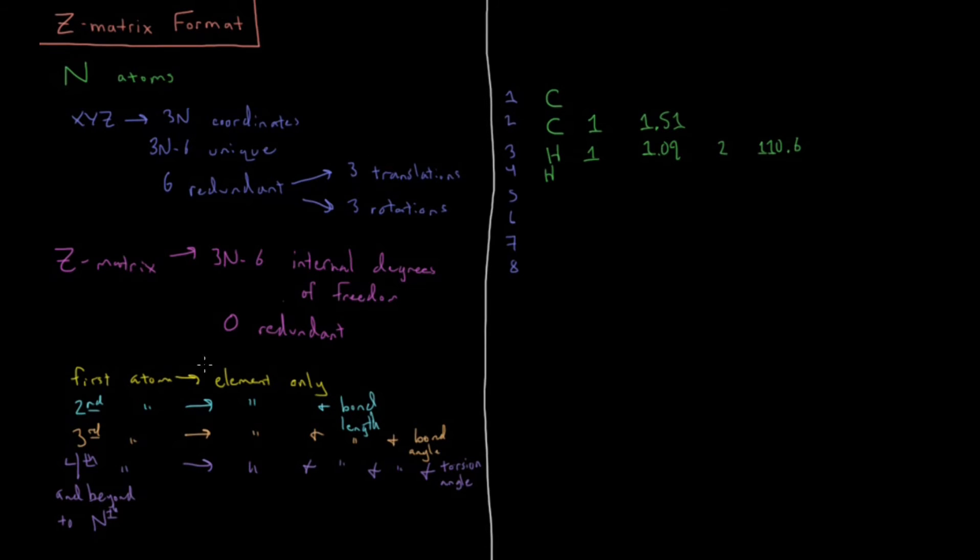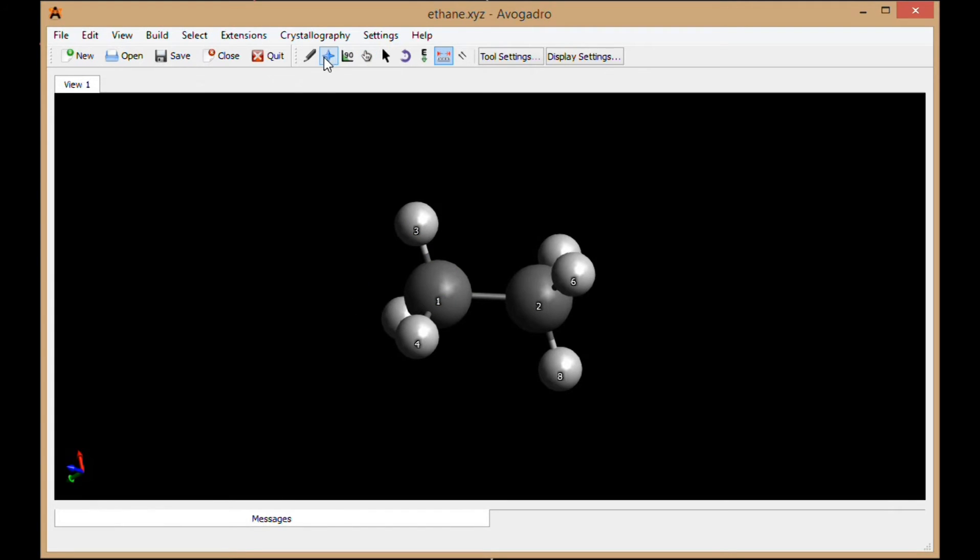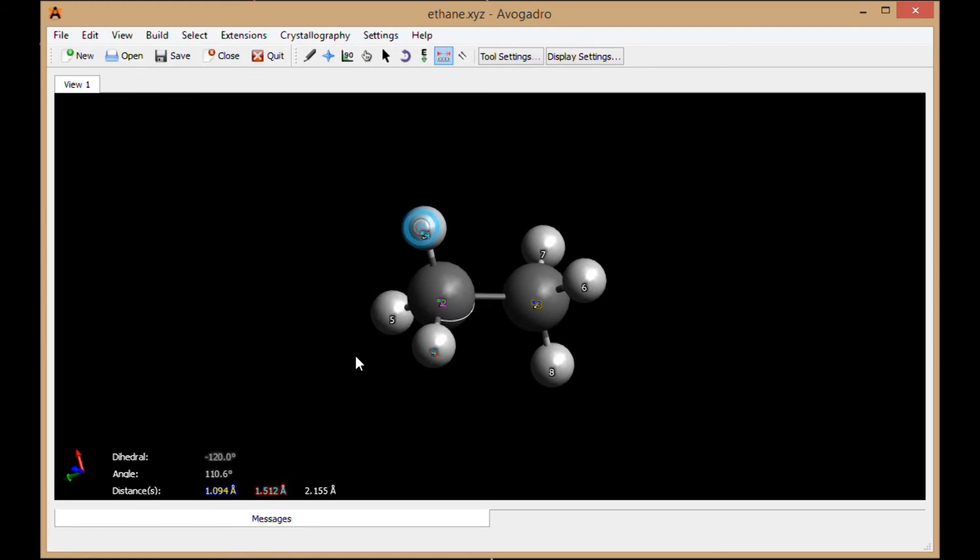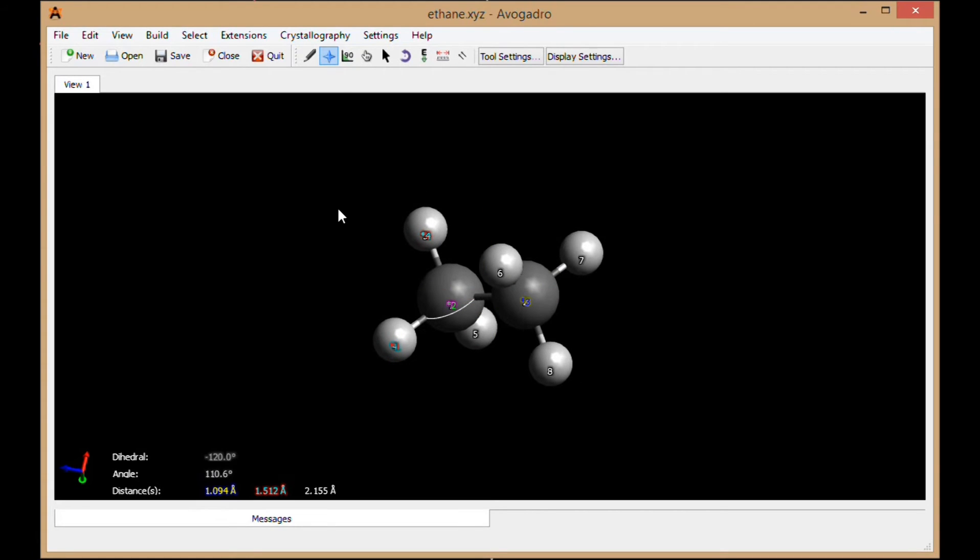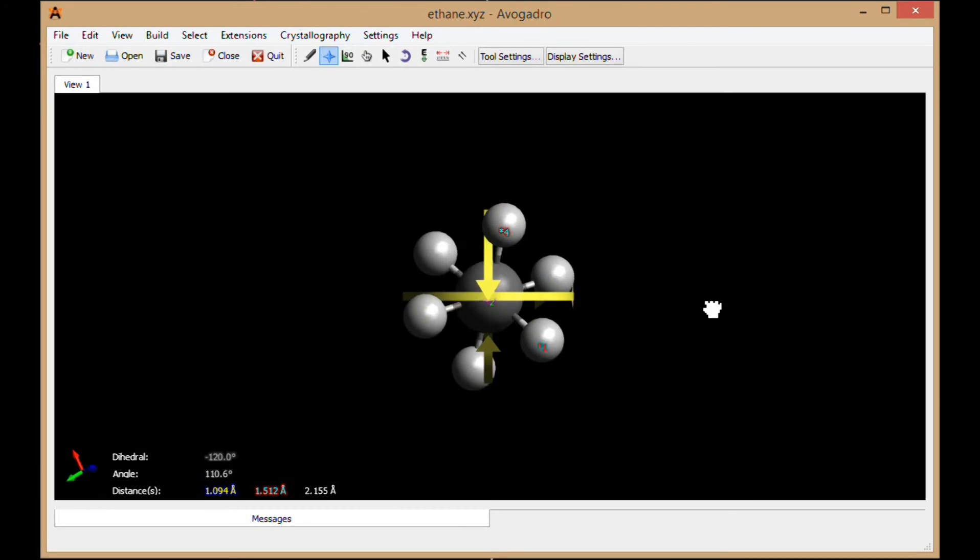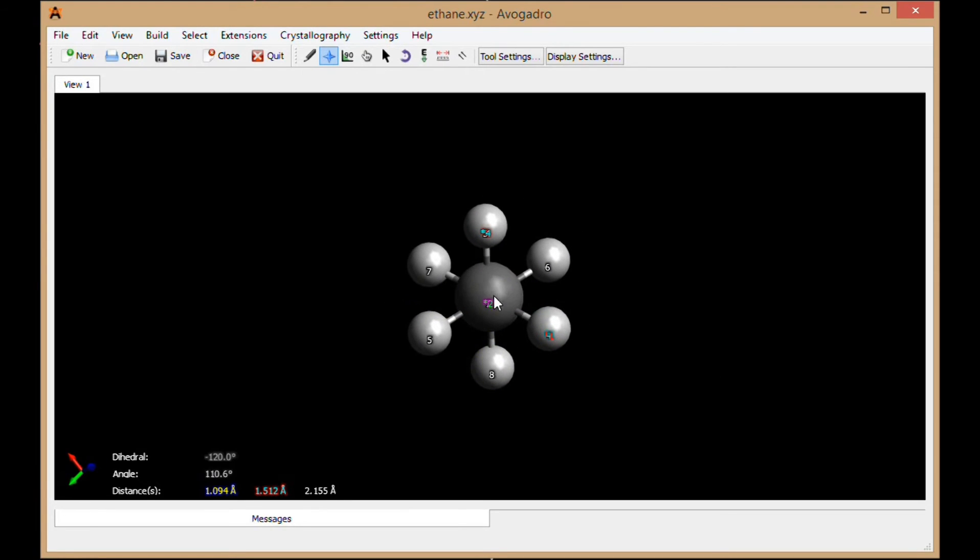Then we're going to do hydrogen number four. Same situation, hydrogen number four is bonded to carbon one, and it has an angle with atom two. Notice also that we have to use atoms that we've already defined. So I have to, with these three atoms, define a bond length, a bond angle, and a torsion angle. If I measure those in Avogadro, 1.094, 110.6 degrees, and then torsion there of minus 120. That torsion is indeed minus 120 there.